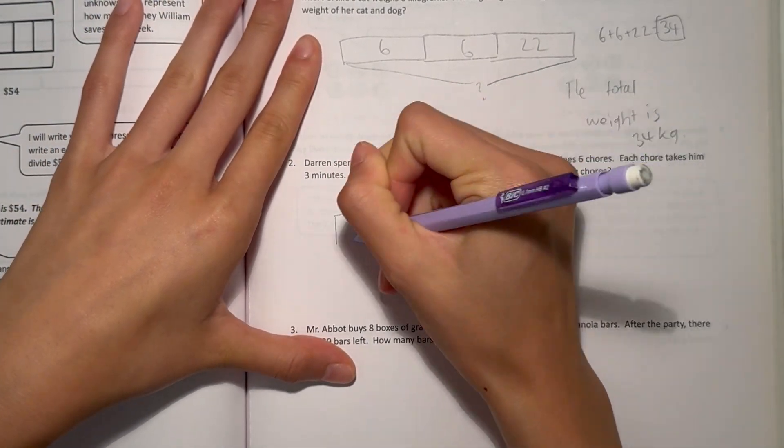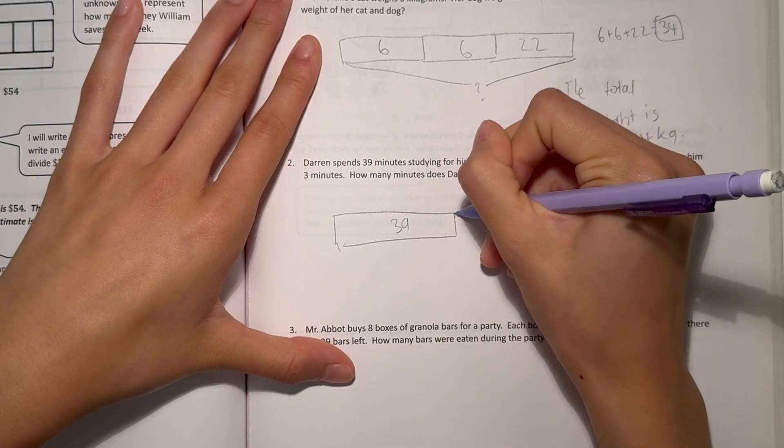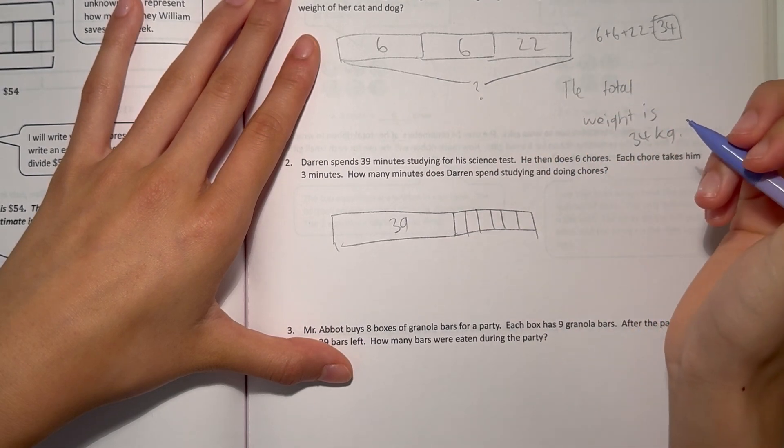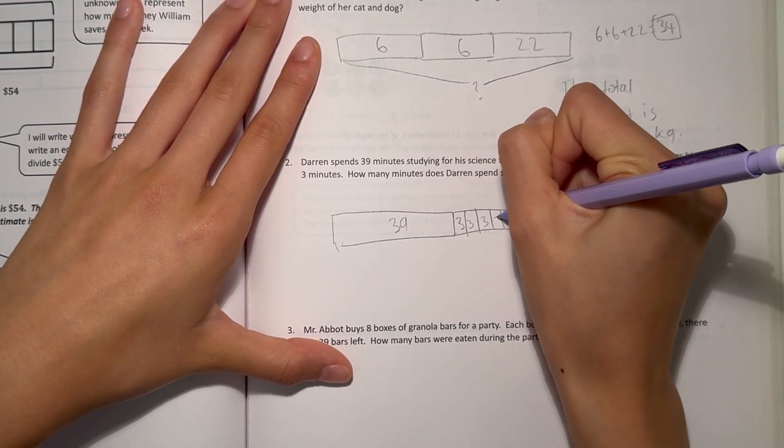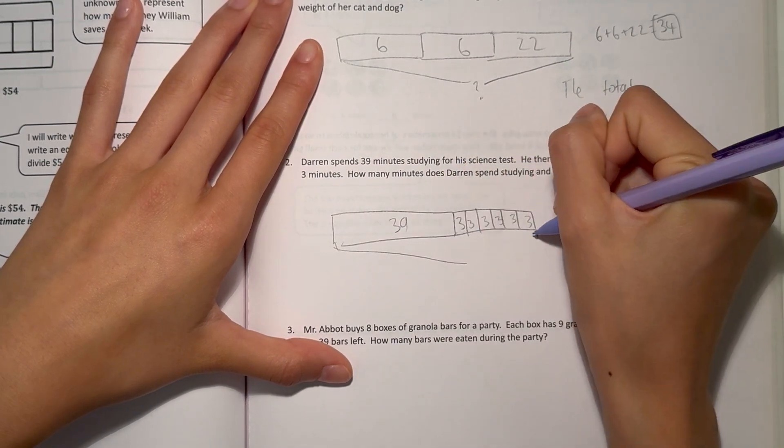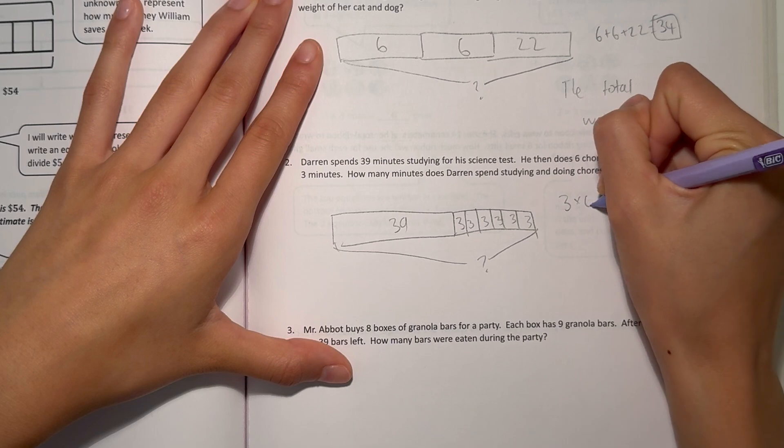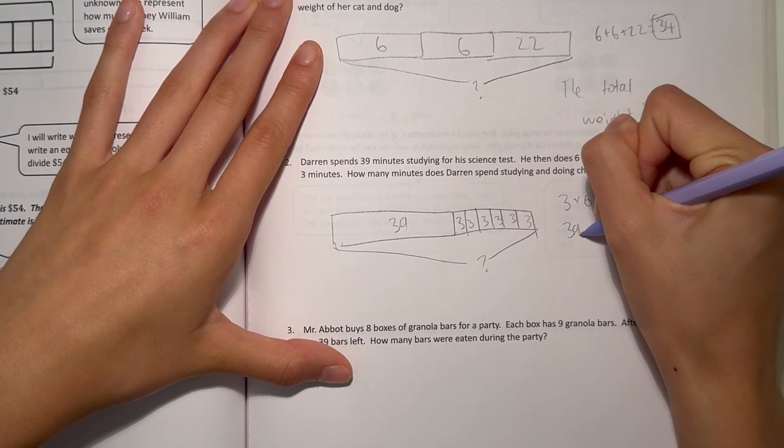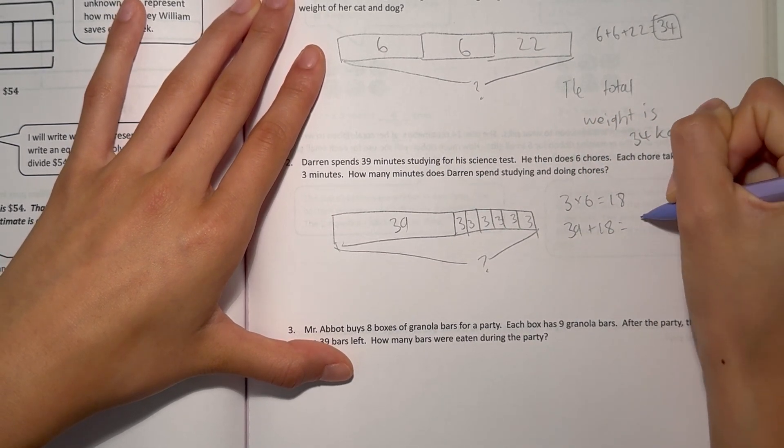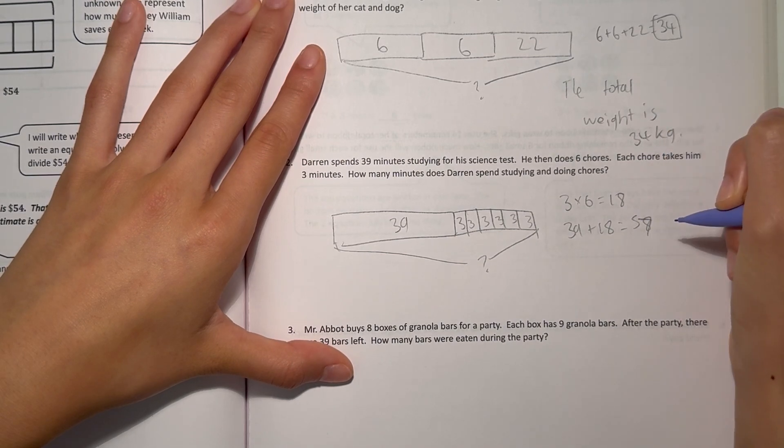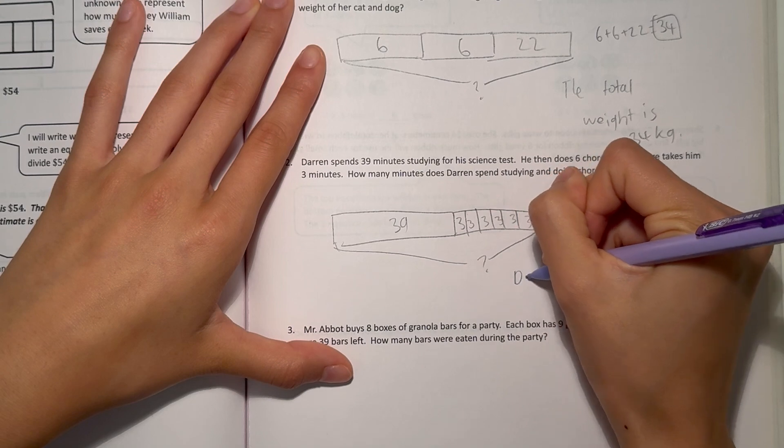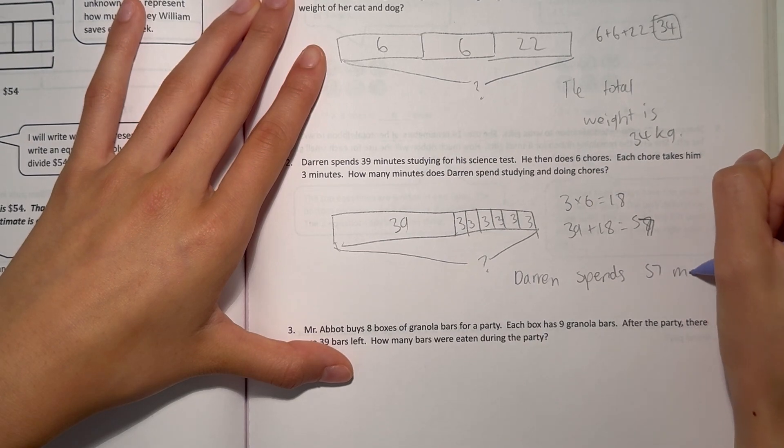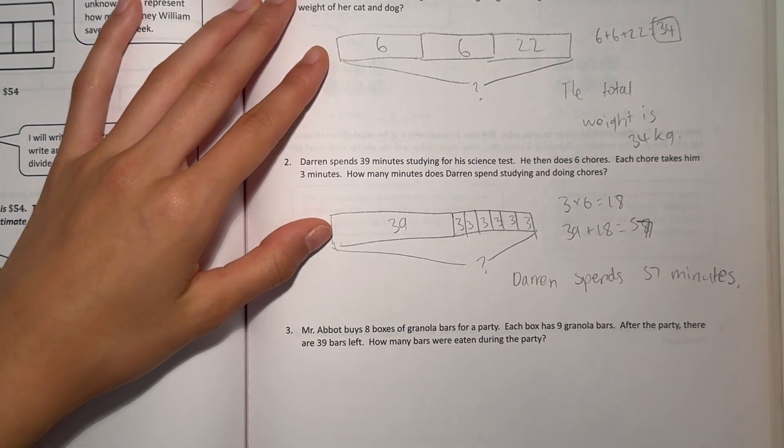Alright, well, first he spends 39 minutes studying. And then he spends doing 6 chores. And each chore takes him 3 minutes. So how much time does he spend studying and doing chores? Well, 3 times 6 is 18. So he spends 18 minutes on total chores. And 39 plus 18 would be 58. Oh wait, 57. So Darren spends 57 minutes doing everything.